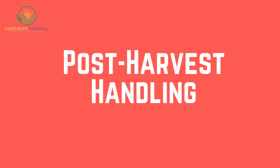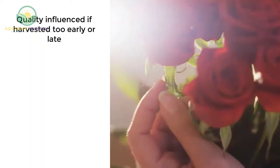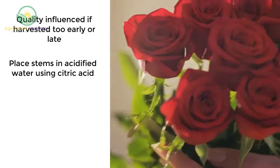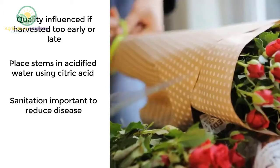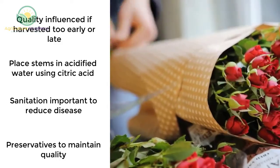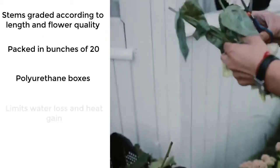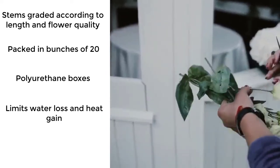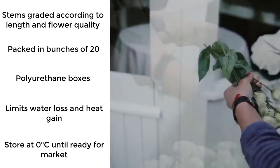Post-Harvest Handling. Flowers will be irreversibly damaged if harvested too early or too late. The stems are sensitive to water loss and must be kept in acidified water using citric acid. Sanitation is important to reduce disease. Preservatives can be used to maintain quality. Stems are graded according to length and flower quality, and are packed in bunches of 20. The boxes are waxed with polyurethane, which limits water loss and heat gain. Boxes can be stored at zero degrees Celsius until they are ready for the markets.